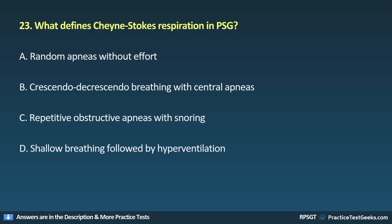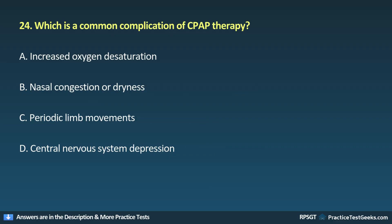Question 23: What defines Cheyne-Stokes respiration in PSG? A. Random apneas without effort, B. Crescendo-decrescendo breathing with central apneas, C. Repetitive obstructive apneas with snoring, D. Shallow breathing followed by hyperventilation.